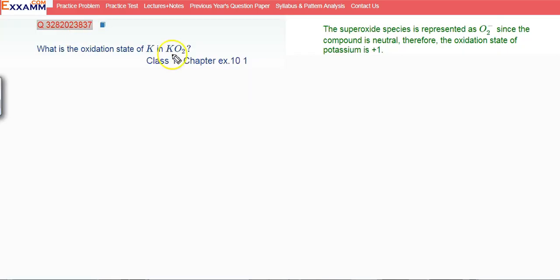Here is your question: what is the oxidation state of potassium in KO2? So it is a superoxide, and as you already know, the oxidation state here is plus one. The superoxide species is represented this way, and since the overall compound is neutral, if this is minus one, then this will be plus one. So the oxidation state of potassium is plus one.